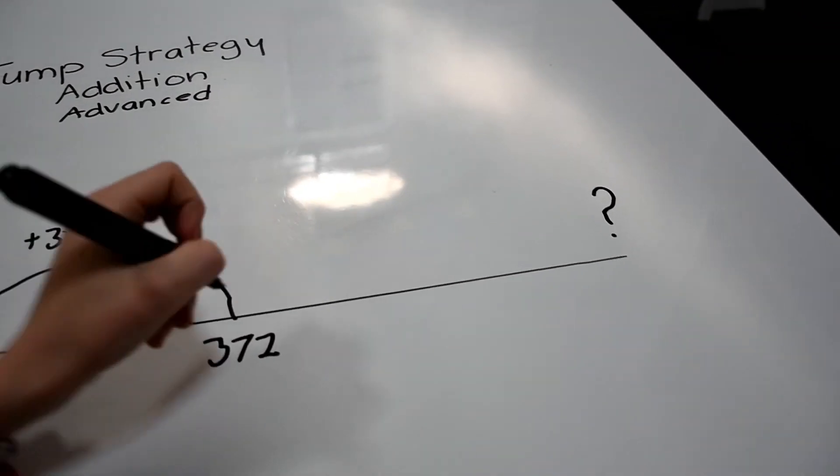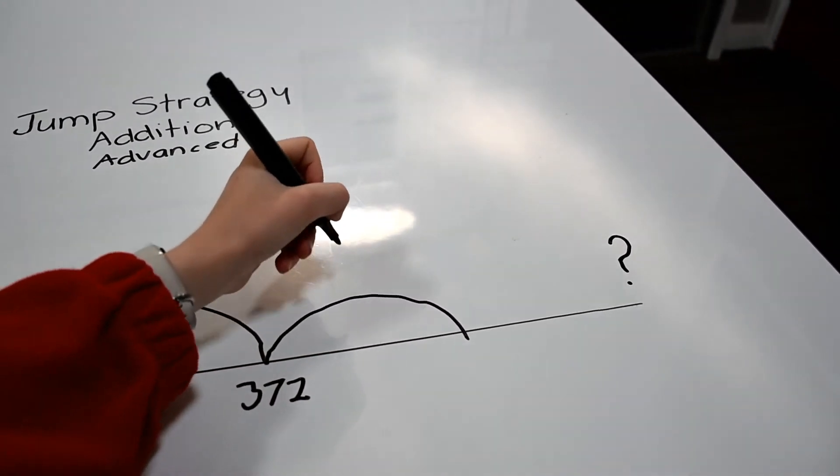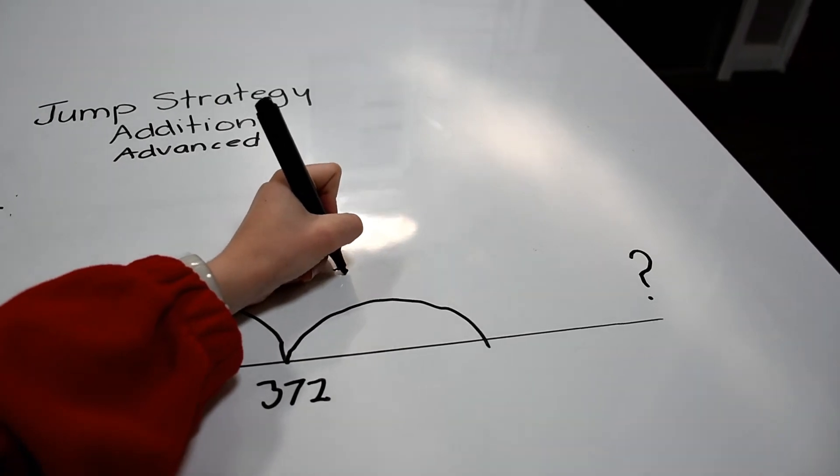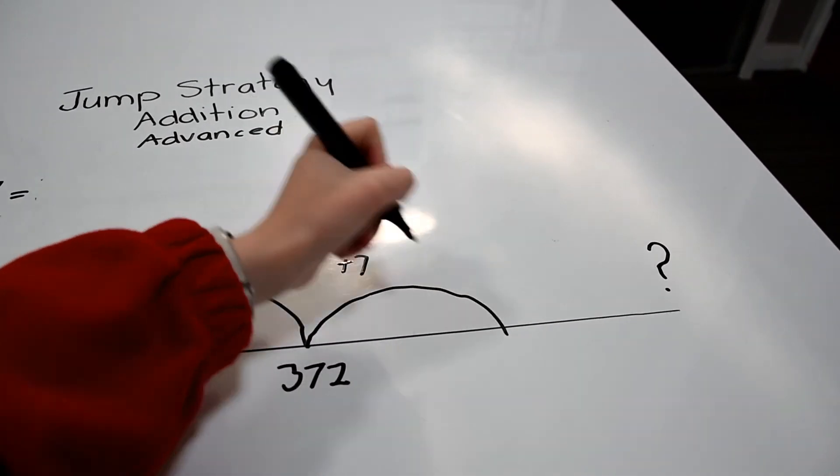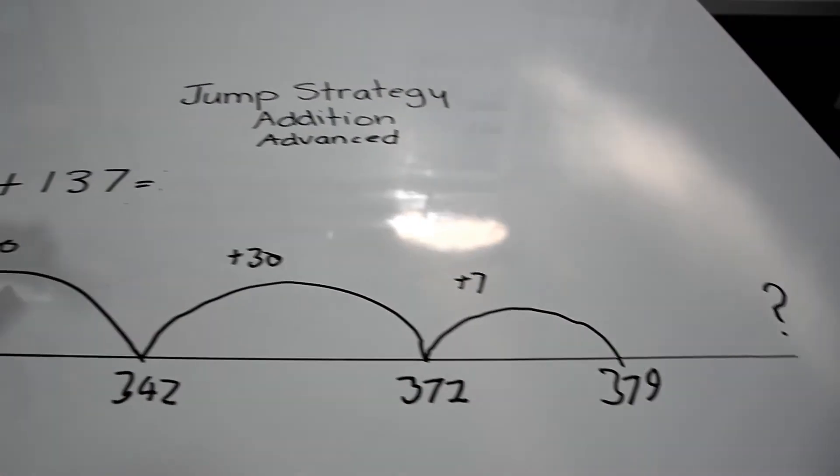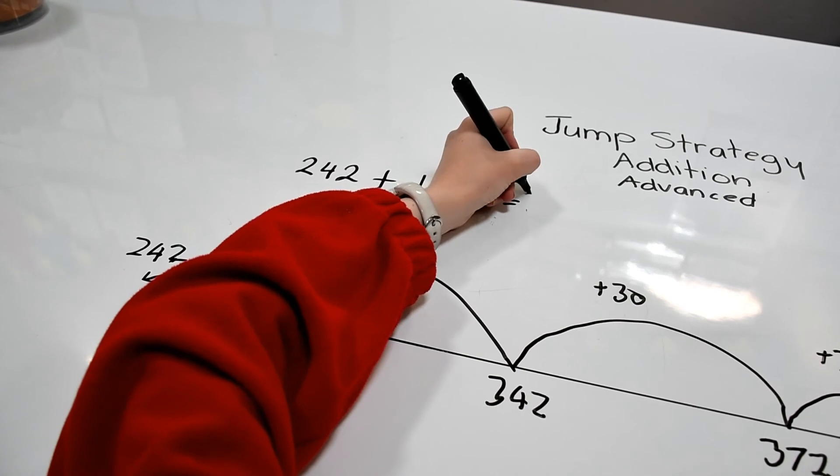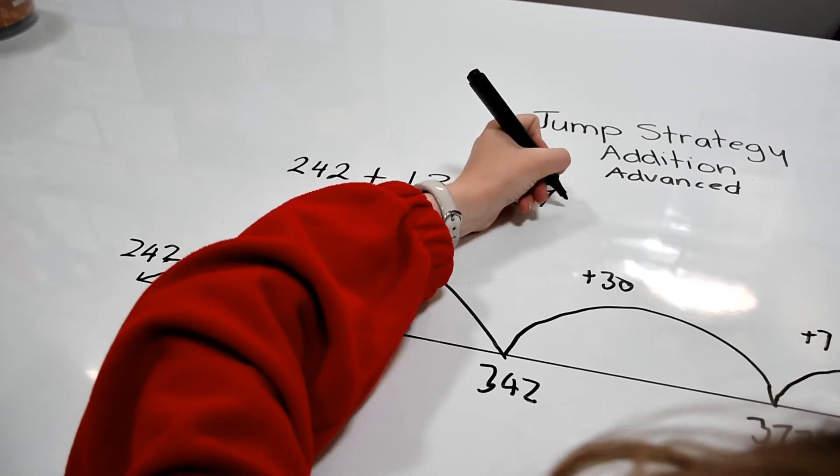We then add the units, which we have 7 of. And this brings us to our grand total of 379. So the answer to 242 plus 137 is 379.